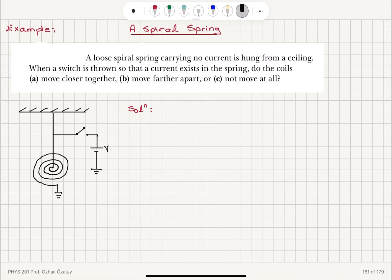So when the switch is closed, the spiral will consist of wires carrying current in the same direction. So these will be parallel wires carrying current in the same direction.